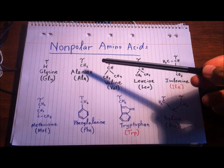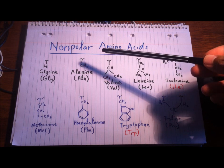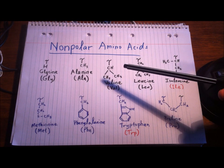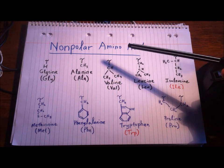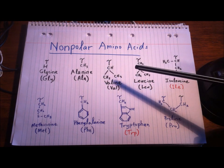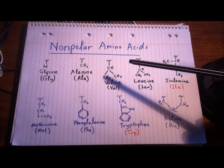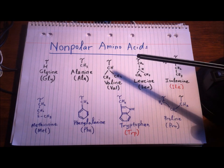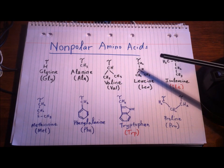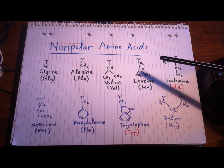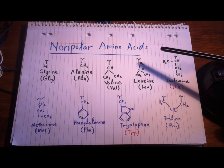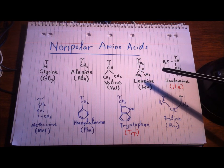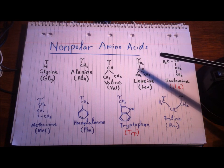Going over the nonpolar amino acids: glycine has a hydrogen R group. Alanine has a methyl group — one carbon. Valine has three carbons, making it propyl; because it's connected from the middle, it's isopropyl. If you look at isopropyl upside down it looks like a V — V for valine. Isoleucine looks kind of like a Y — it has four carbons, making it butyl, in the isobutyl configuration, so leucine's R group is isobutyl.